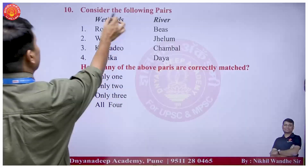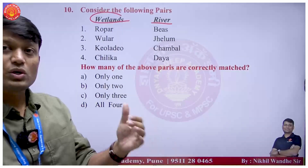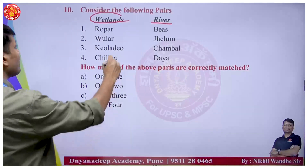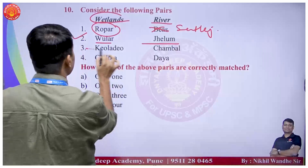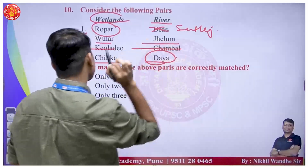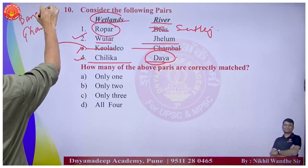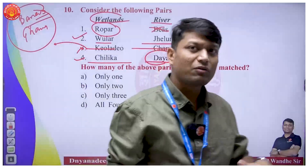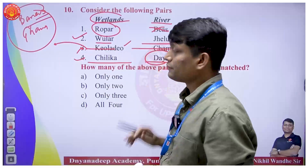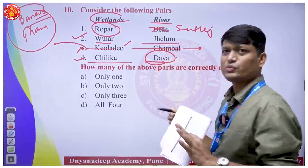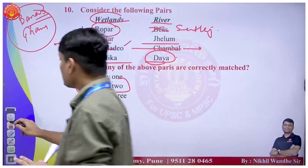Next is a wetland lake mapping question. Regarding Ropar wetland - it is not on the Beas river, it is on the Sutlej river. Keoladeo is on the Banas and Ghana rivers - small rivulets and streams are present, not major rivers. Keoladeo National Park wetlands are on Banas and Ghana. Chilika is not on the Chambal. So only two options - option B with two correct options - are going to be correct.